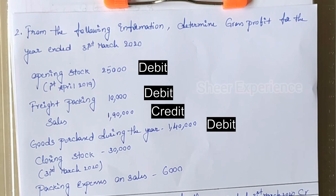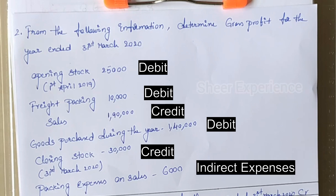So we can directly consider goods purchased as net purchases. Next we have closing stock, which comes on the credit side. Lastly, packing expenses on sales is an indirect expense; this will not be considered for the trading account and will go to the profit and loss account.